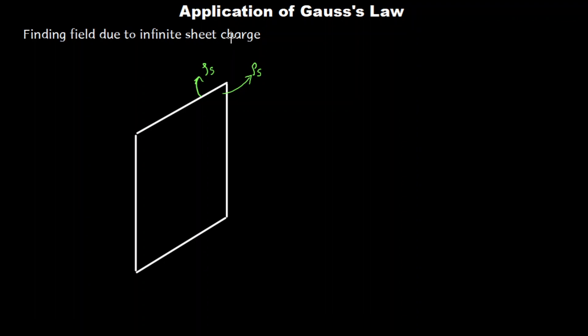It is not necessary that the sheet itself should be infinite, extending from minus infinity to plus infinity — that is also possible, but it is not necessary. If you keep the point where you need to find electric field very near to the sheet charge, then compared to that distance, I can treat the sheet charge as an infinite sheet charge. That is the idea.